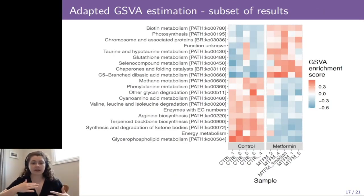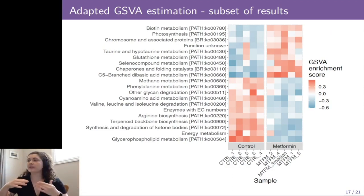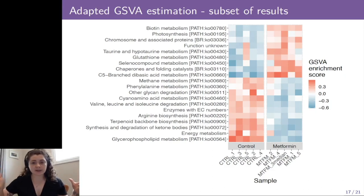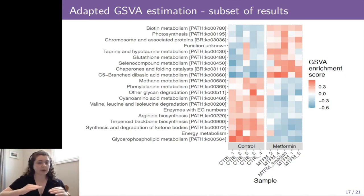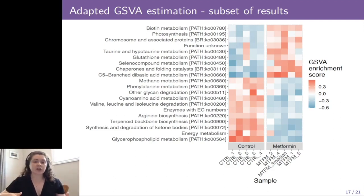We do this for every single peptide set and every single sample, and we're able to visualize it on a heatmap. This is an example of a very small subset of the results, because there are so many different peptide sets. In this case, we're looking at the significantly changed functions from our control microbiome to our metformin-treated microbiome, where now we can understand what's functionally changing in our microbes after they've been treated with this drug.